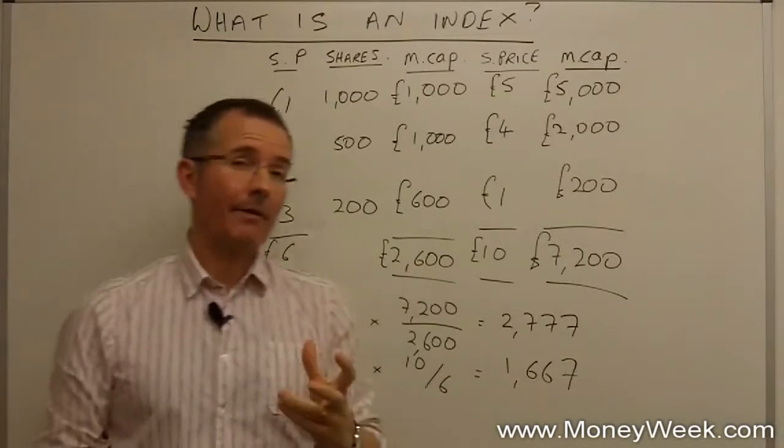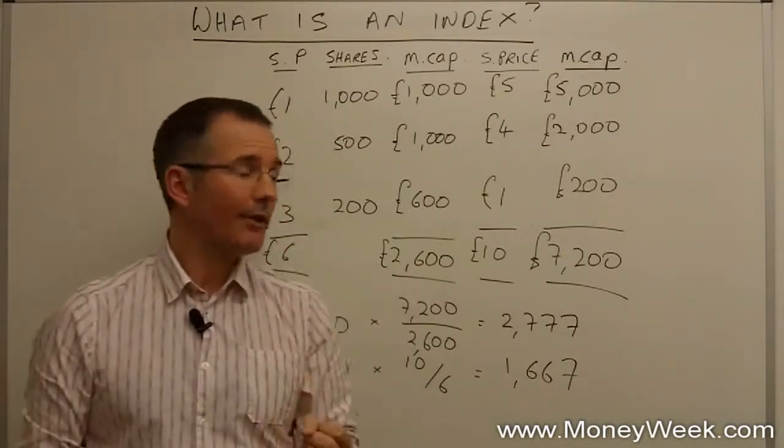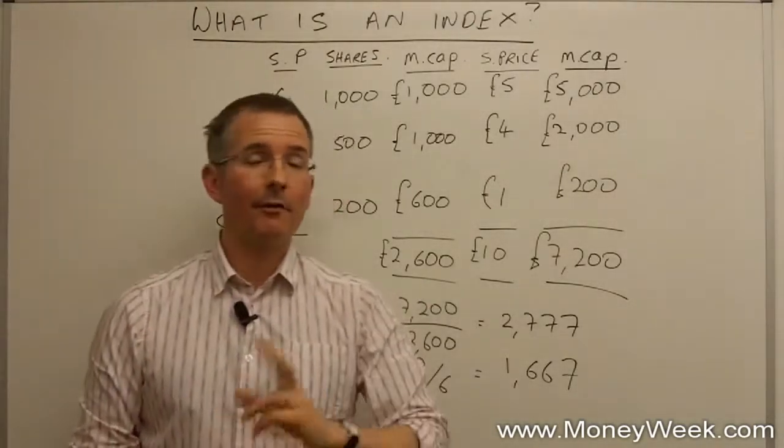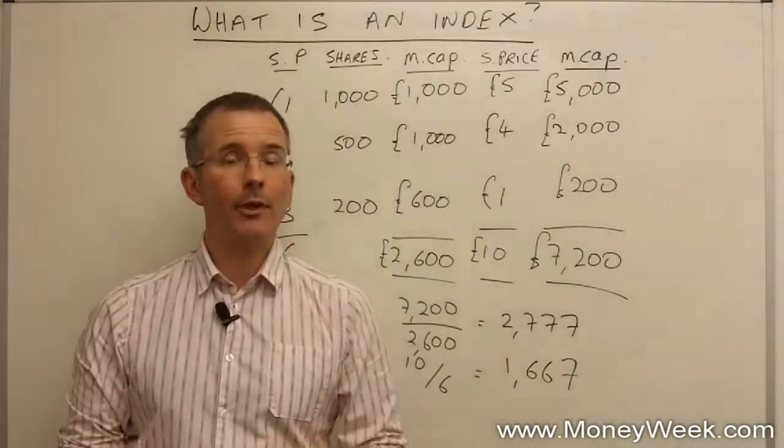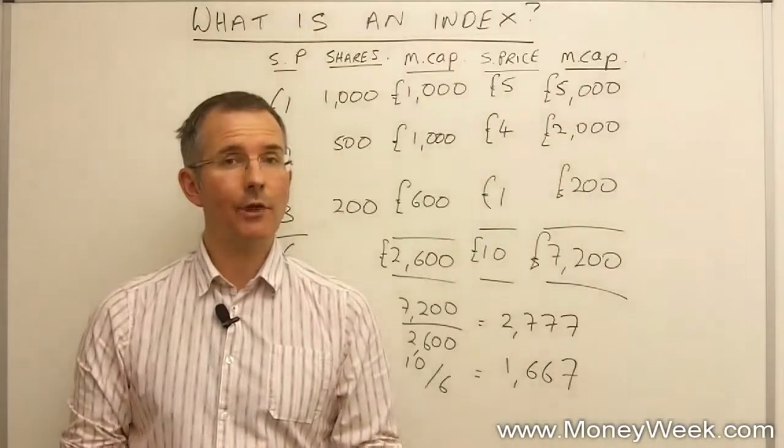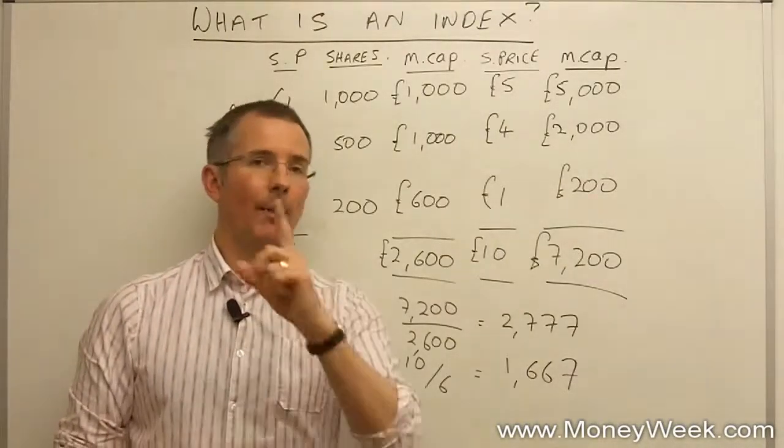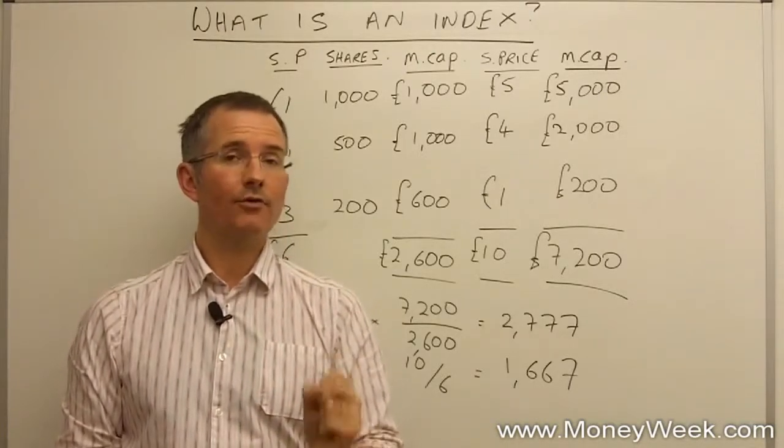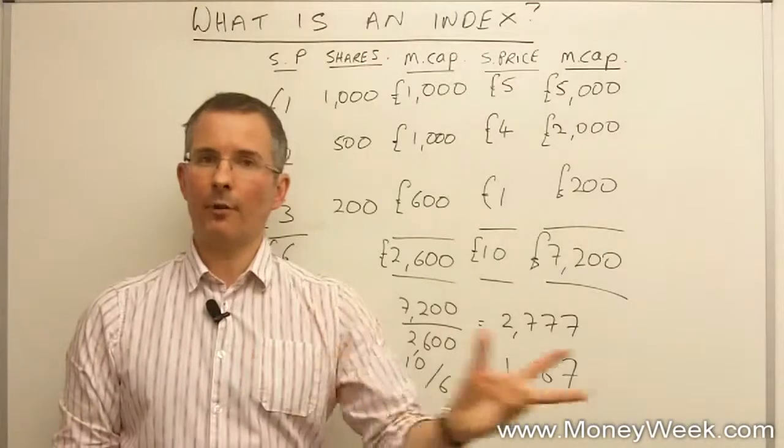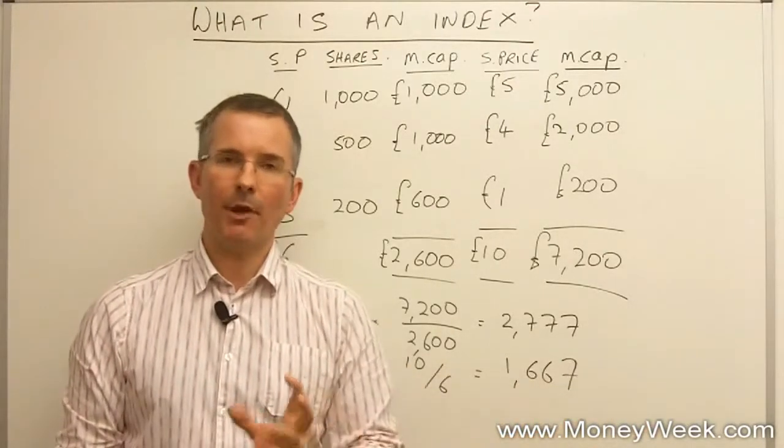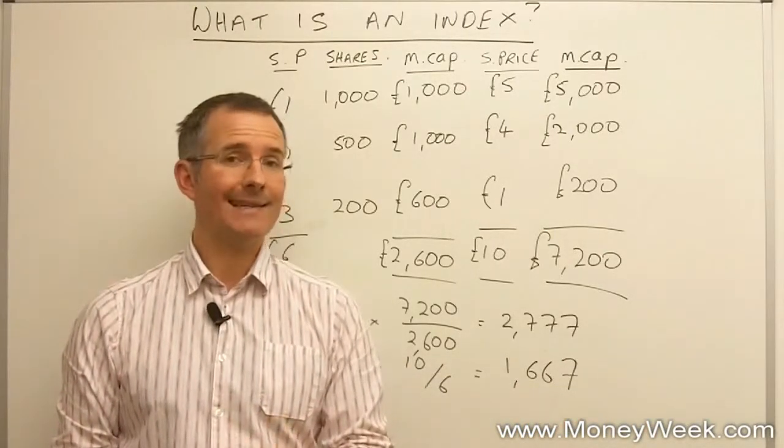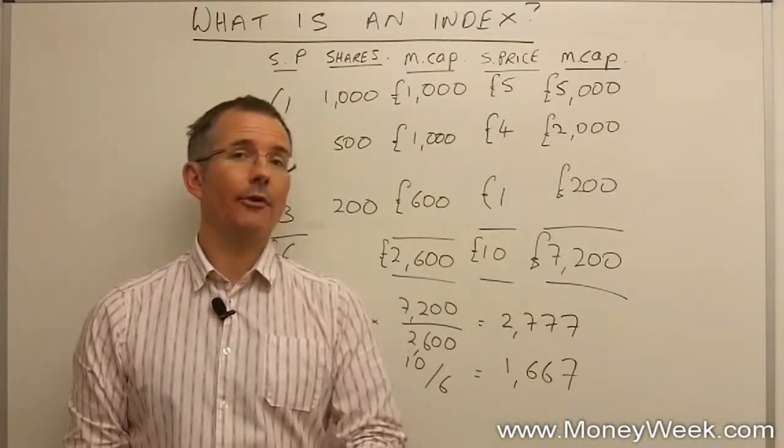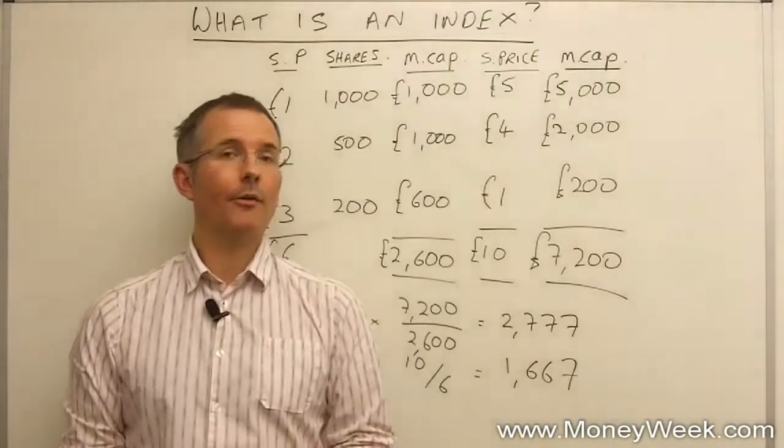Although company C has had a pretty poor year, using market capitalization it's only a small company compared to these two, especially company A, so its impact on the index is more muted. You'll find people will debate the merits of using share price - that's fairly unusual nowadays. The Dow Jones still does, versus the FTSE 100. Most indices are put together by comparing market capitalizations over time.